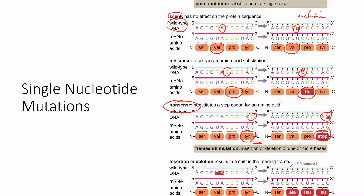A frameshift mutation occurs when a nucleotide is removed. For example, a sequence of A, G, C, G, T, A, C, C becomes A, G, C, G with the T removed, shifting the entire reading frame. Before the mutation everything is the same, starting with serine. After the mutation, everything changes — valine, proline, tyrosine become alanine, leucine, leucine — creating a completely different protein. If the frameshift happens towards the beginning of the gene sequence, it would completely change the protein that's created, making a very dramatic difference.